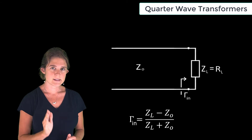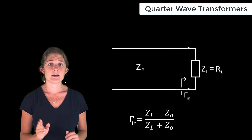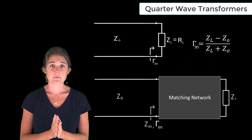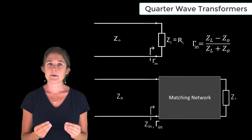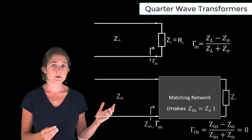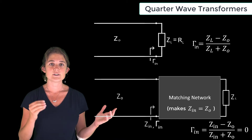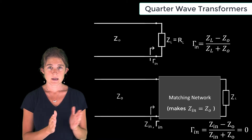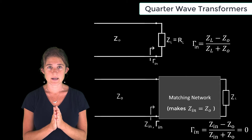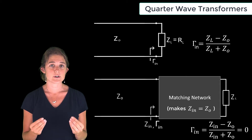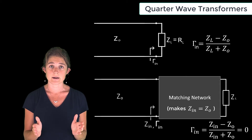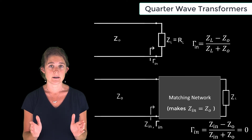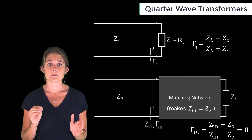To prevent this happening, we can choose to add a matching network. A matching network is an added piece of circuitry that makes the input impedance to the load match the characteristic impedance of the feed line. In this case, we're going to add something called a quarter wave transformer between the load and the line so that the input impedance at the end of the line is equal to Z0.